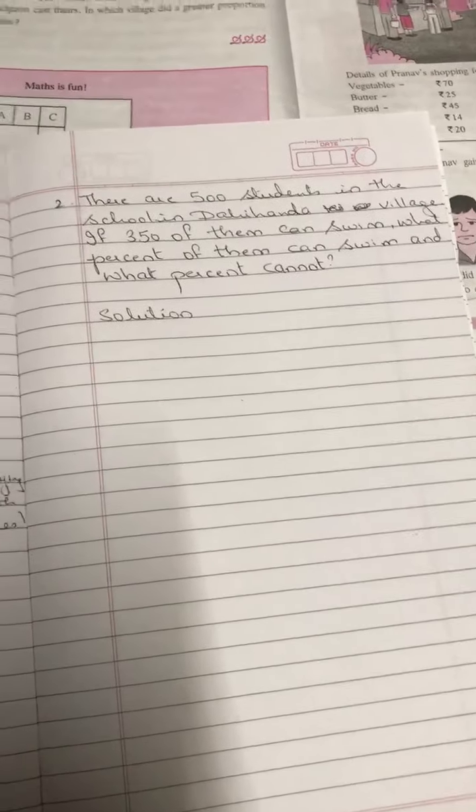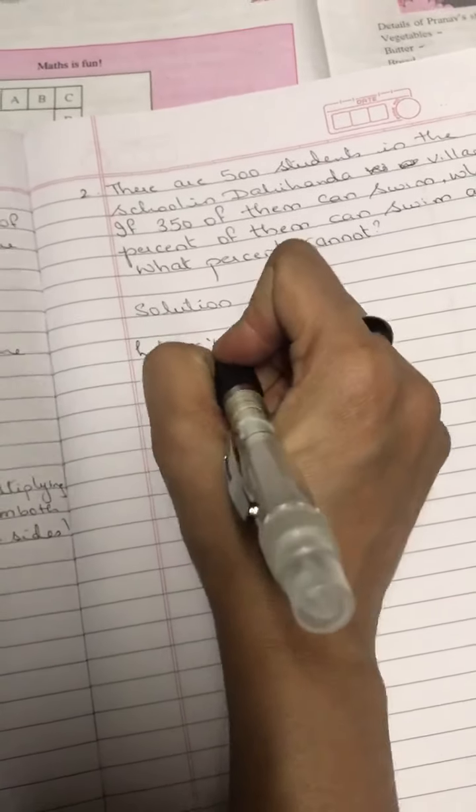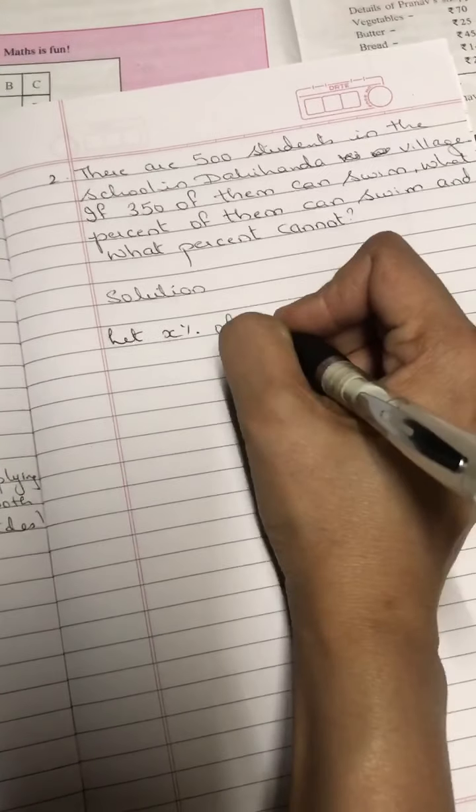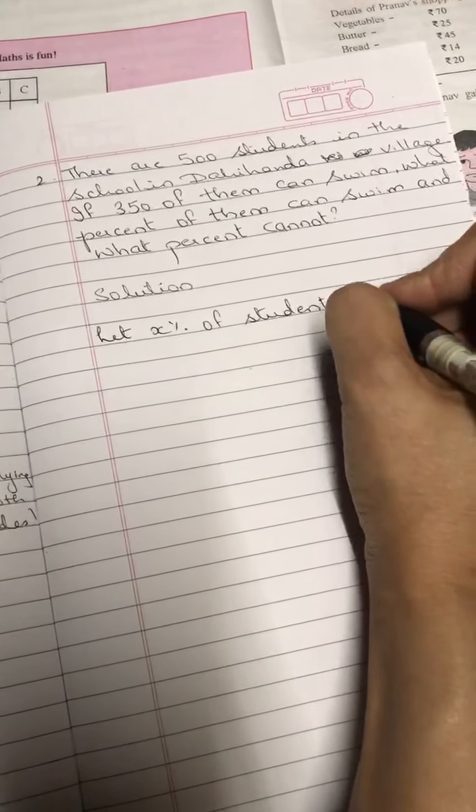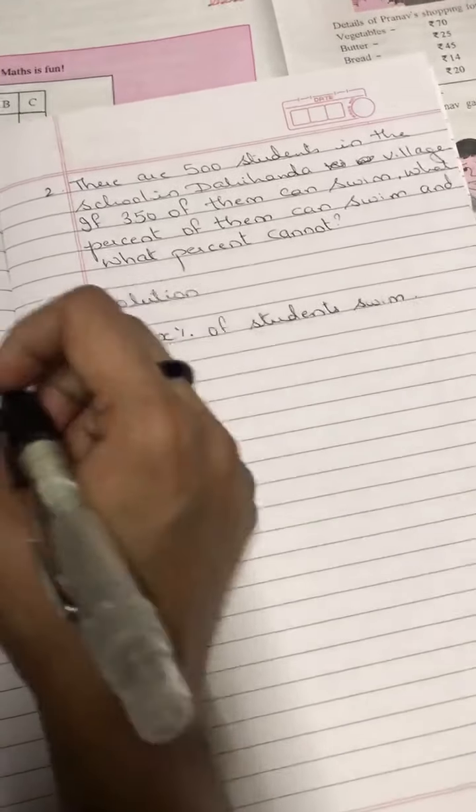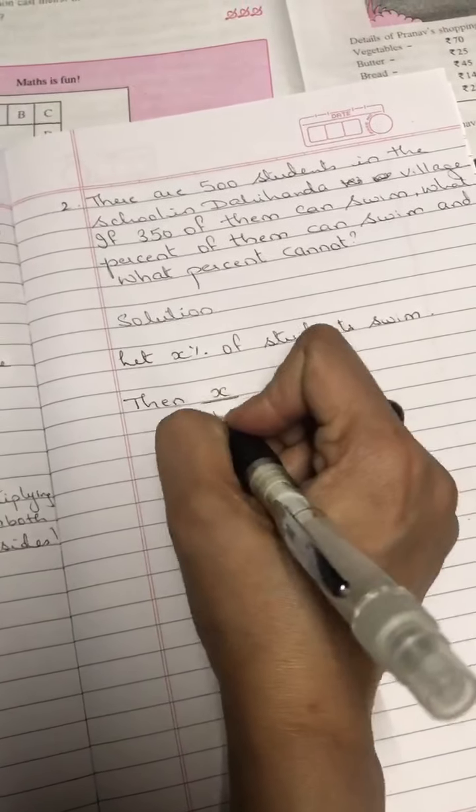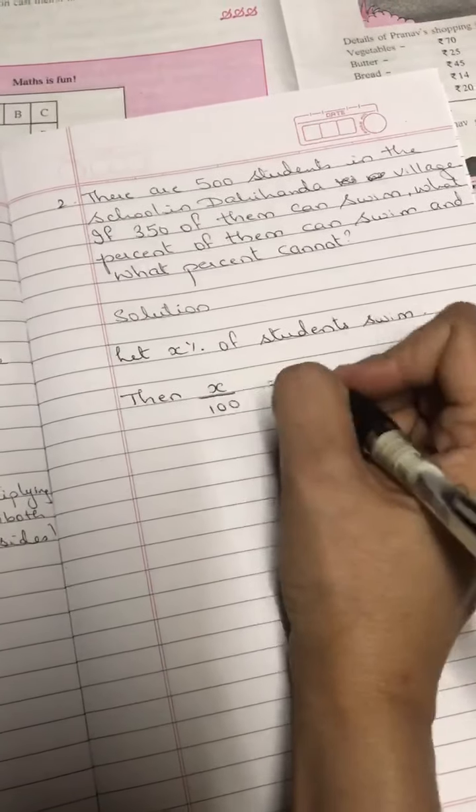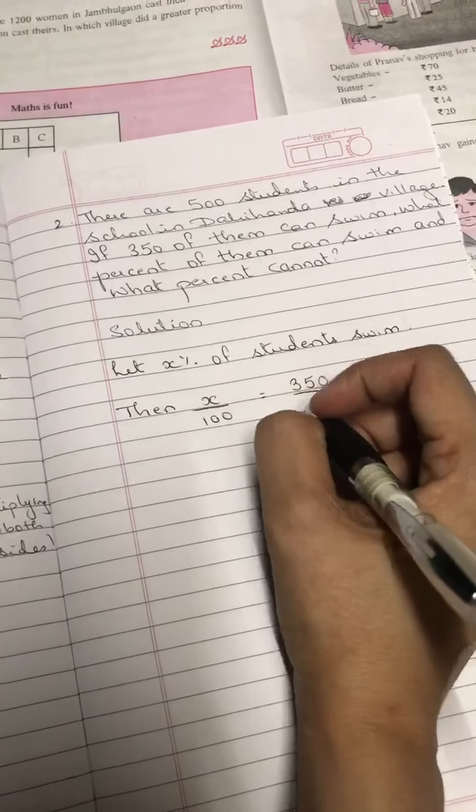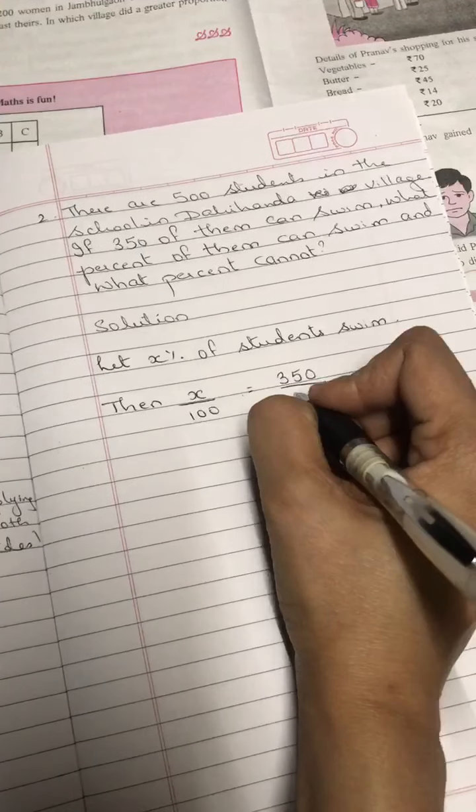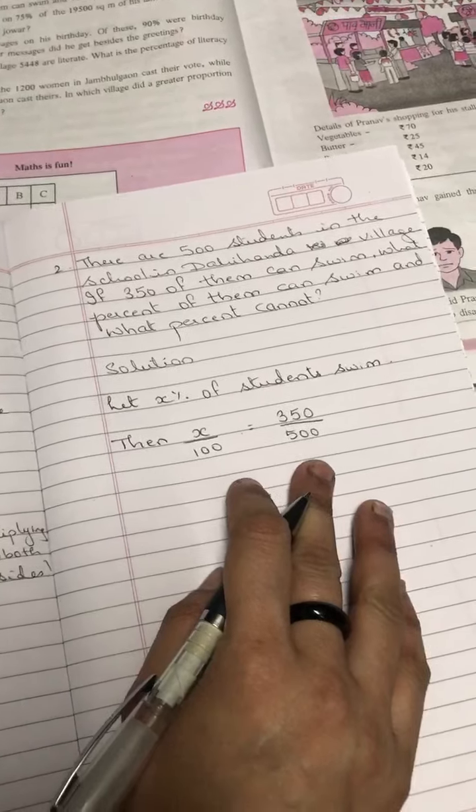Let us find out students. Now, so we write: let x percent of students swim. We make the ratio. Then x over 100 is equal to 350 over 500.